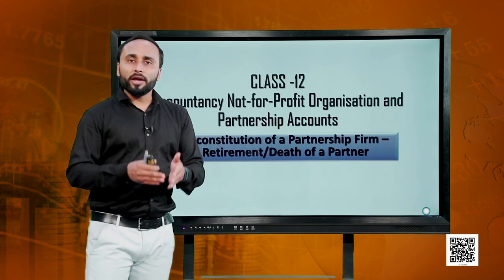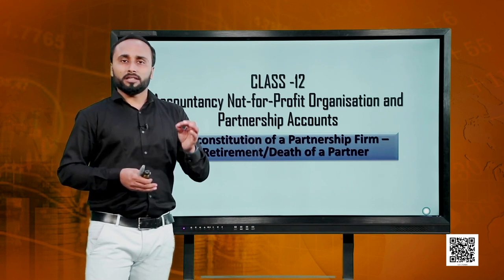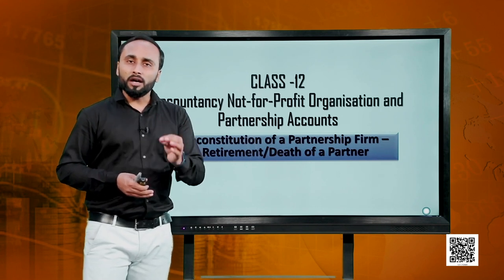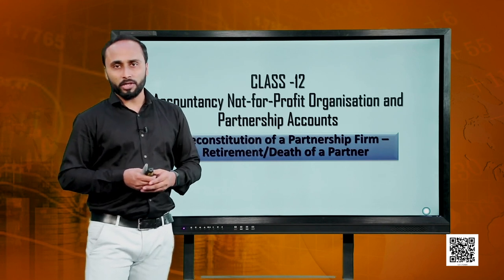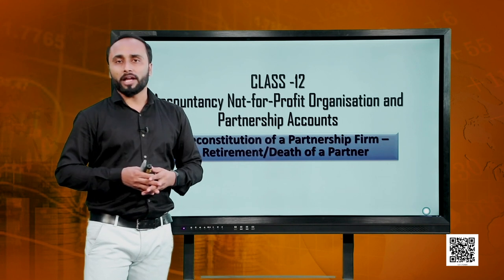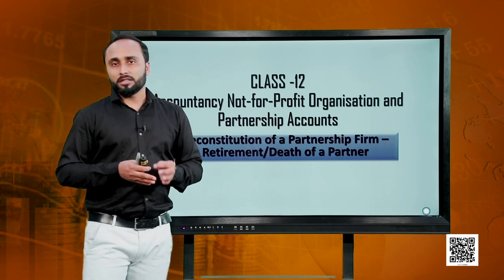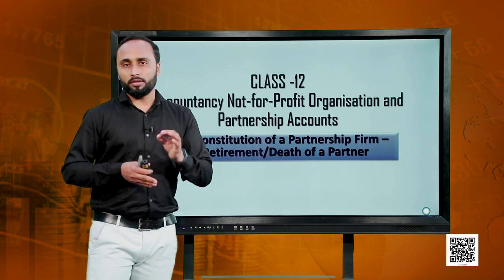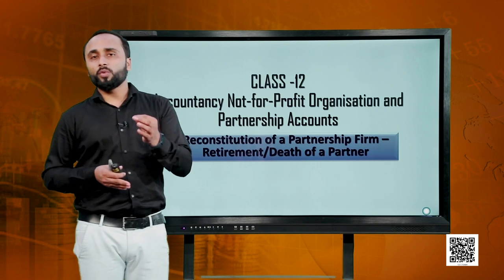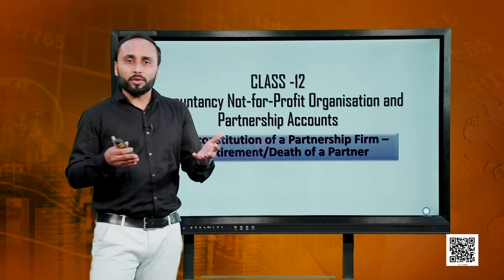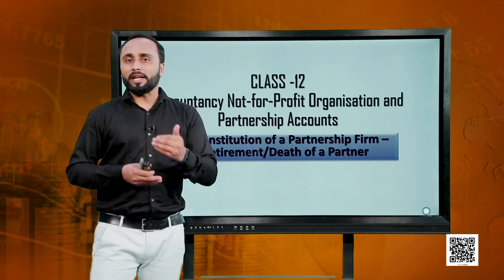These are the things that are going to be there in this chapter. In the first part, we learnt how to calculate the gaining ratio or the new profit sharing ratio at the time of retirement. We also saw how to treat the goodwill which is valued for retirement. Whenever the partner retires, the goodwill of the firm is valued or revalued, and this newly valued goodwill needs to be treated.